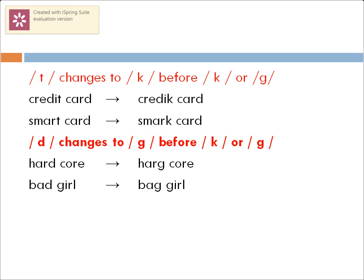Finally, we look at the cases where the sounds /t/ and /d/ change to /k/ whenever they are followed by /k/ or /g/. So 'credit card' sounds like 'crekkit card,' 'smart card' comes out as 'smuck card,' 'hard core' sounds like 'hark core,' and 'bad girl' sounds like 'bag girl.'